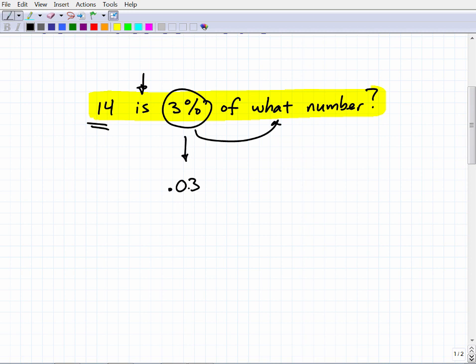So 0.03 of what number? Remember, what number in algebra? That's just X. It's some variable. So 0.03 times some number. I don't know what it is. But in algebra, it's 0.03 times some number. Let's just call it X. All right.